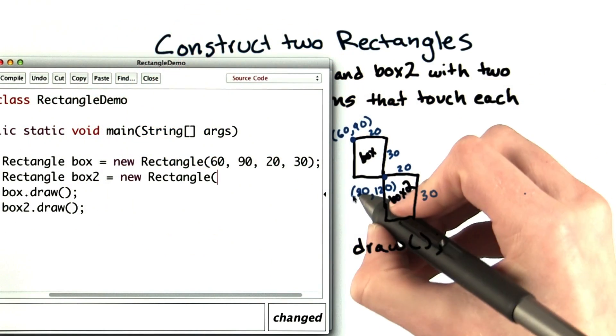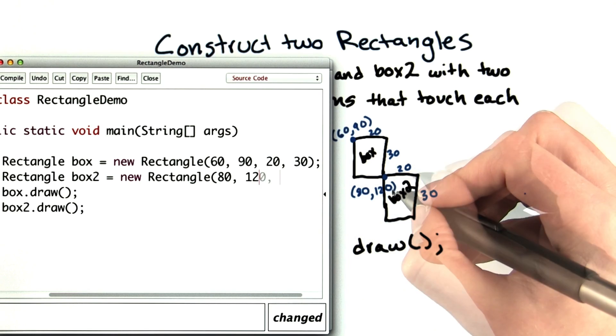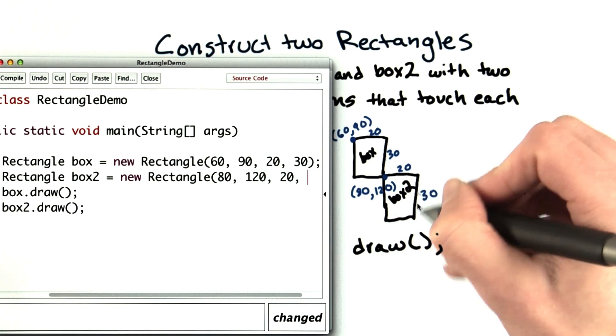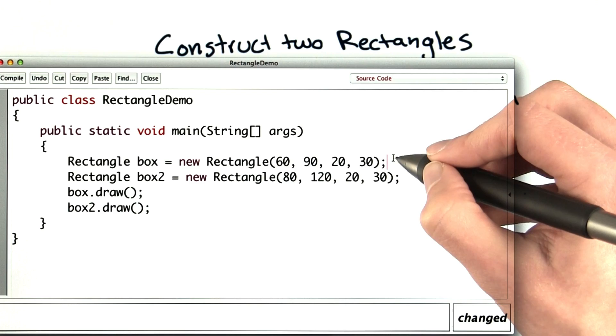Now for box2, x is 80, y is 120, the width is 20, and the height is 30. So if I stretch this out, it should look like this.